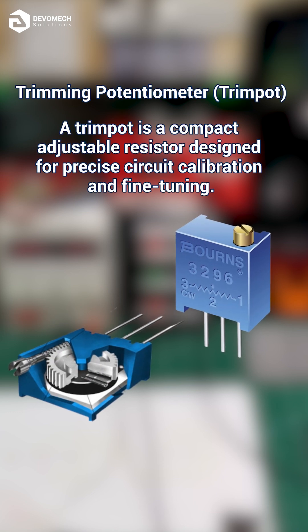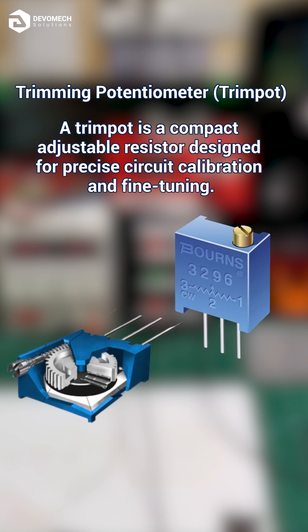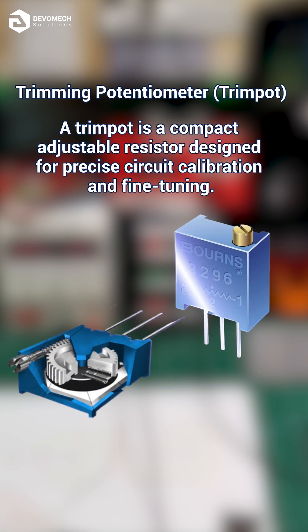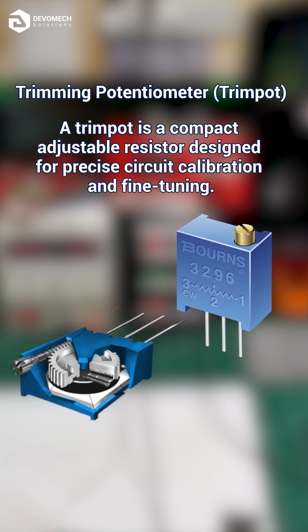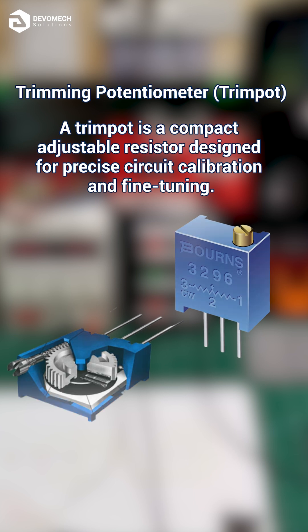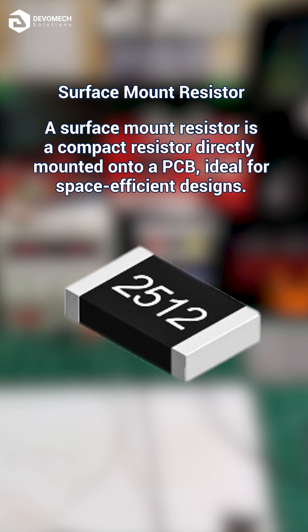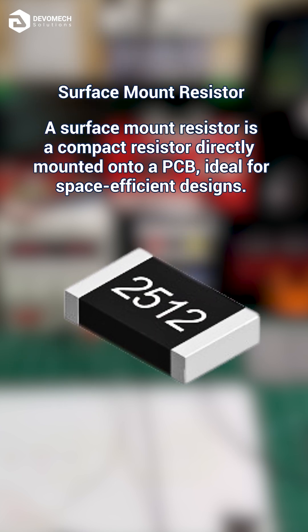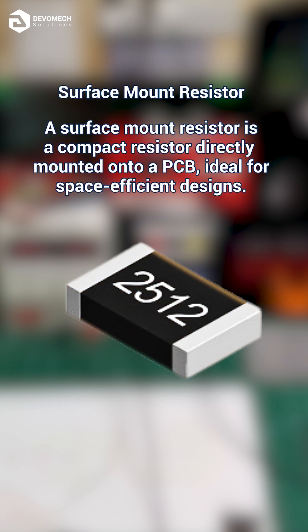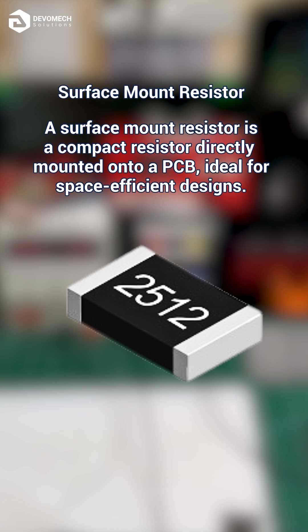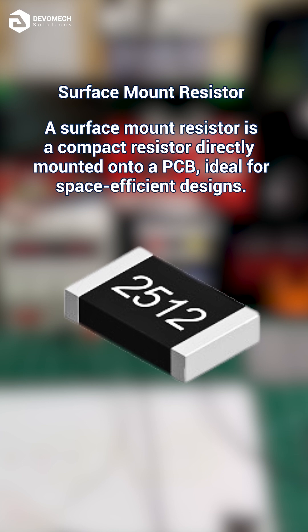A trim pot is a compact adjustable resistor designed for precise circuit calibration and fine tuning. A surface mount resistor is a compact resistor directly mounted onto a PCB, ideal for space efficient designs.